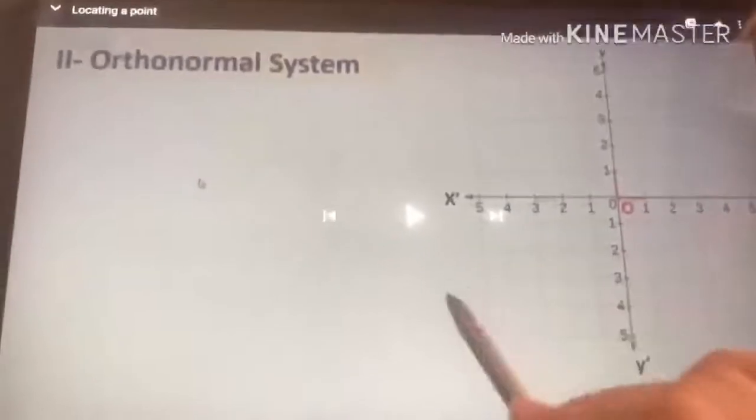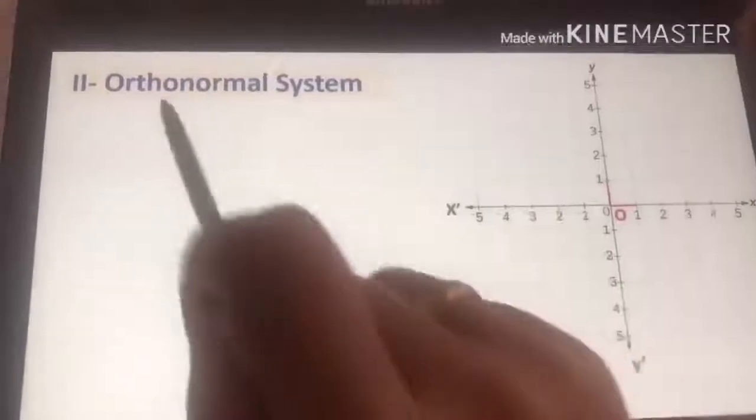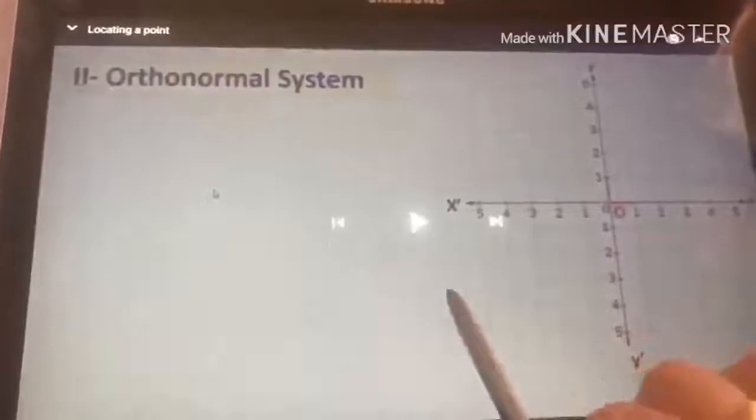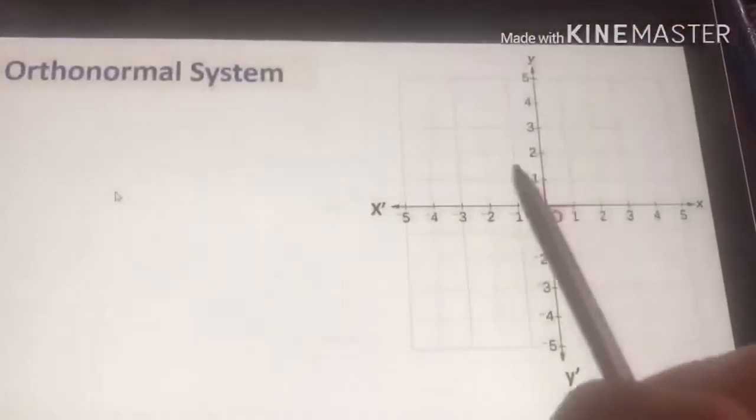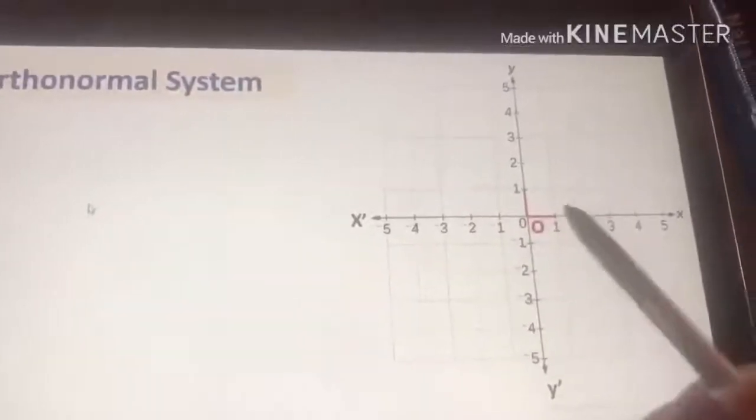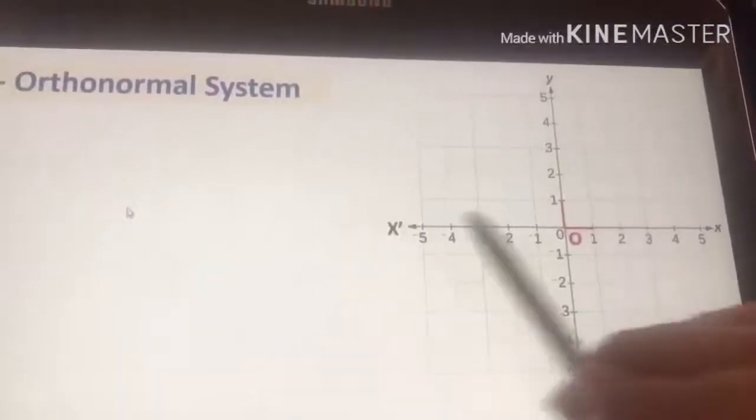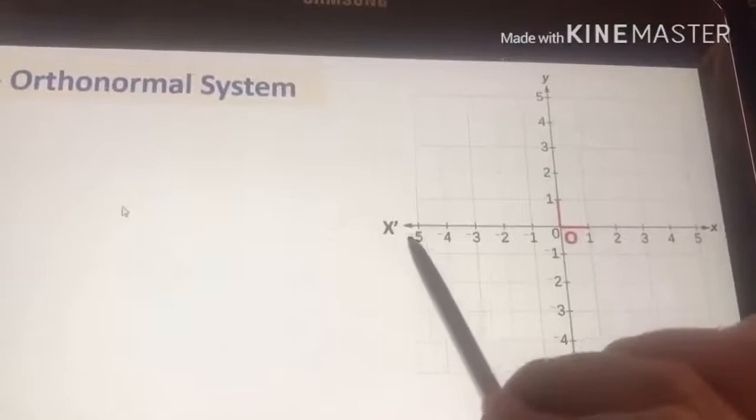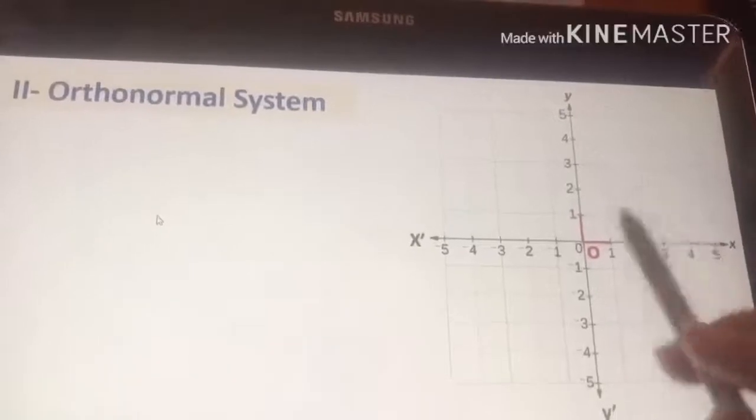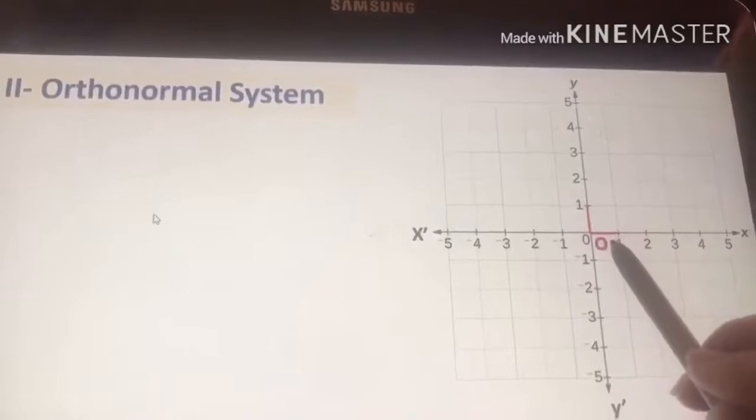Before we continue explanation, we have to review what we already explained in the previous session. We said that today in this lesson we talk about the orthonormal system. In the orthonormal system, we have two axes, which are the x-axis and the y-axis. They are perpendicular and intersect each other at O. X prime O X, from negative to positive. Y prime O Y. We have two axes, x-axis and y-axis. Each square is one unit.